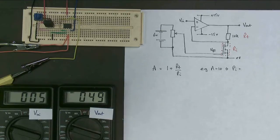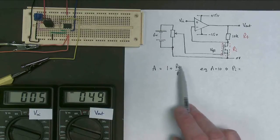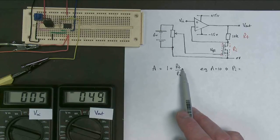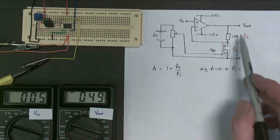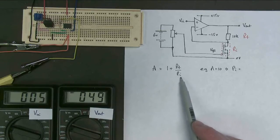So what must RI be? Well, if the gain is 10, RF over RI is 9. The feedback resistor, this one here is 10K, so this must be around about 1K. Just a little bit more.